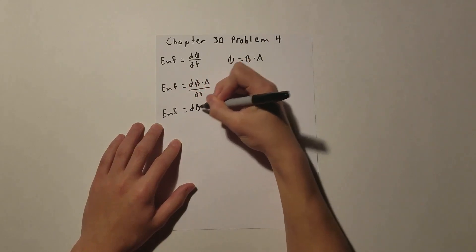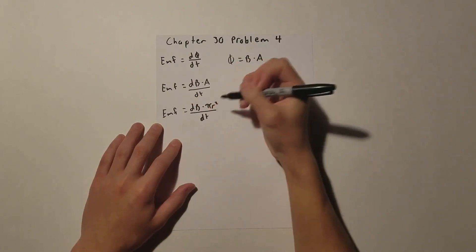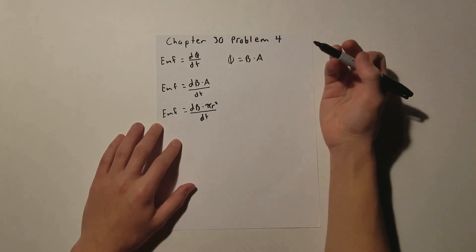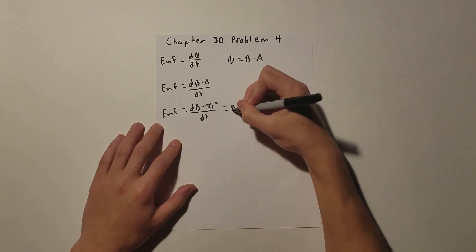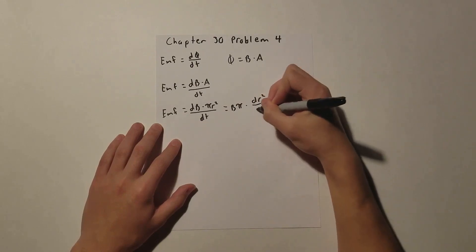So we get dB times pi R squared with respect to T. And we know that B and pi are both constants, so we can take them out of the derivative. So we get B pi times dR squared over dt.